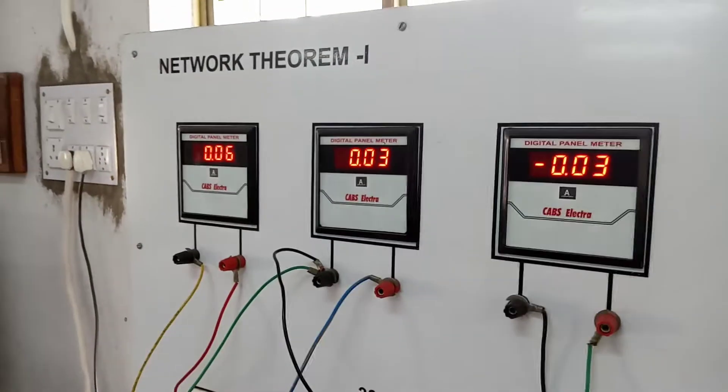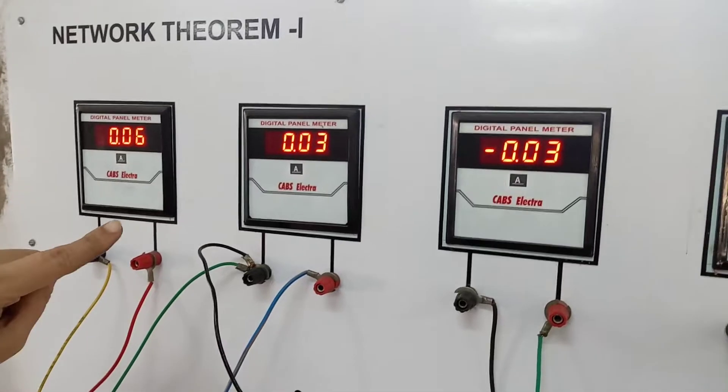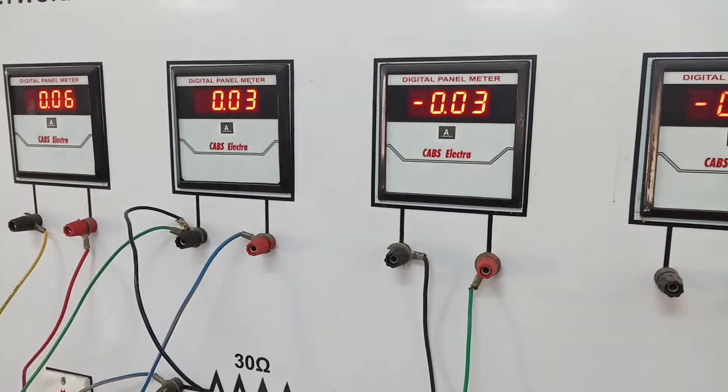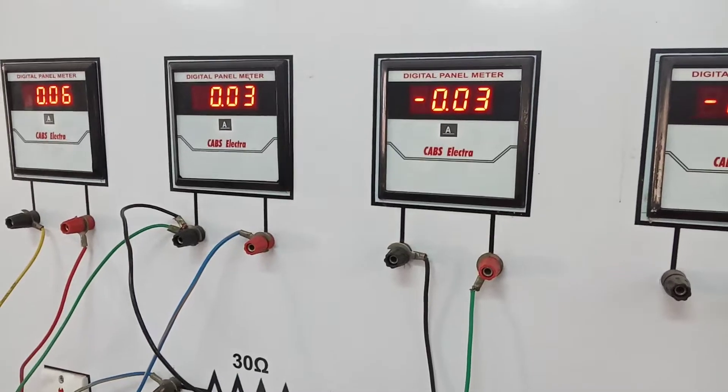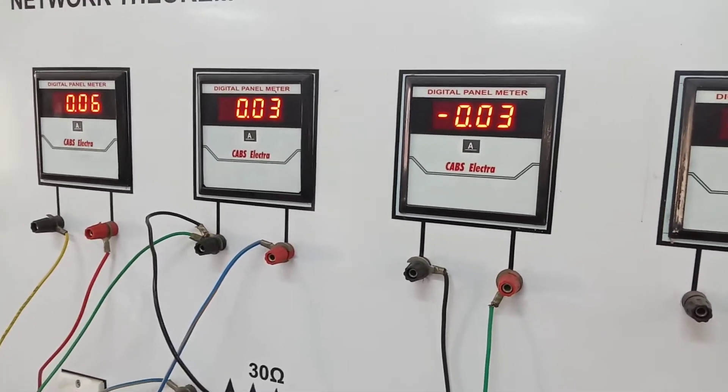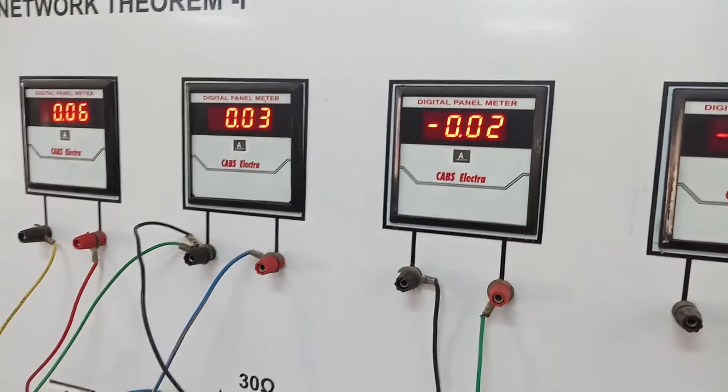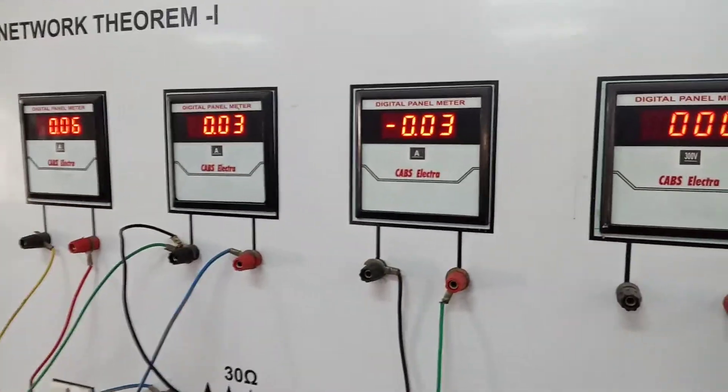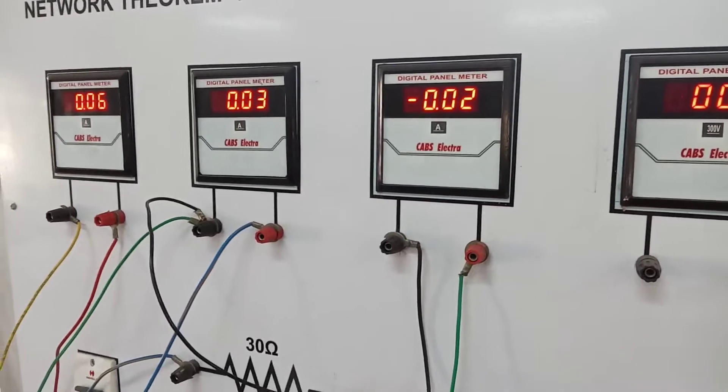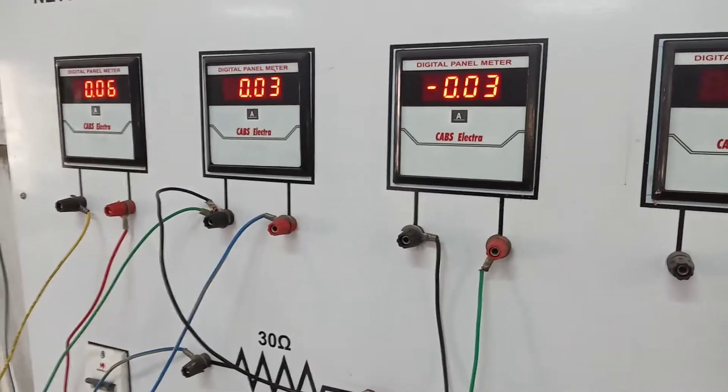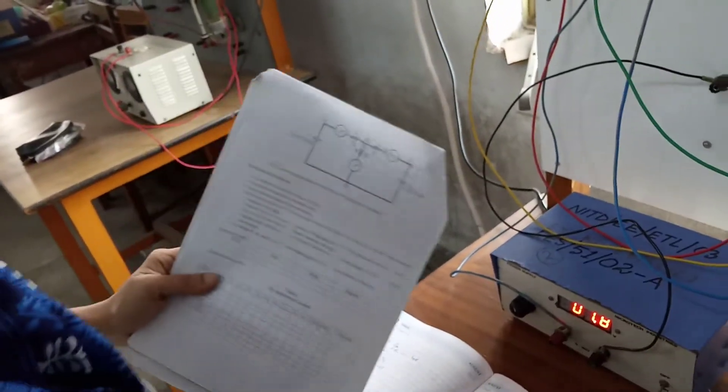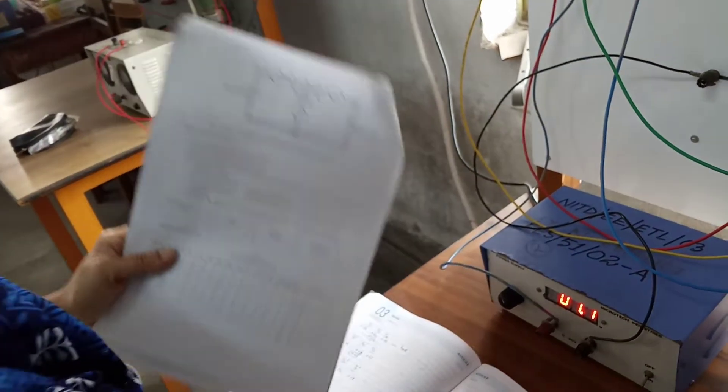Now we have the next set of readings. V1 is connected only and we will measure all three currents. These are the measurements: I1a, I2a, and I3a. This is DC current. You can see the negative sign, meaning current is flowing in the opposite direction to what we assumed previously. This is expected because only this source is connected and the current should be in this direction. That is when V1 is connected only.